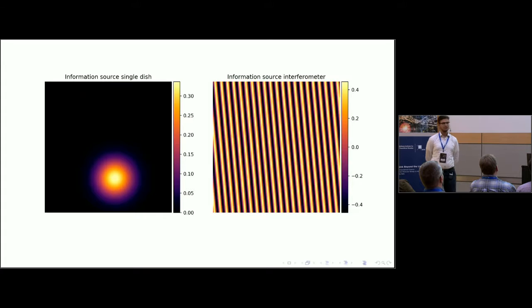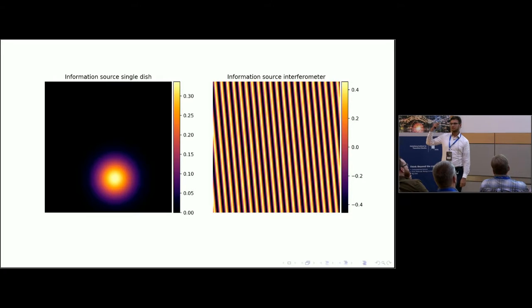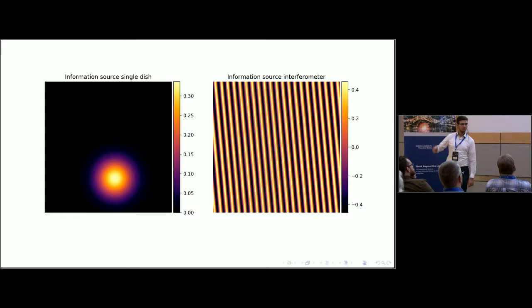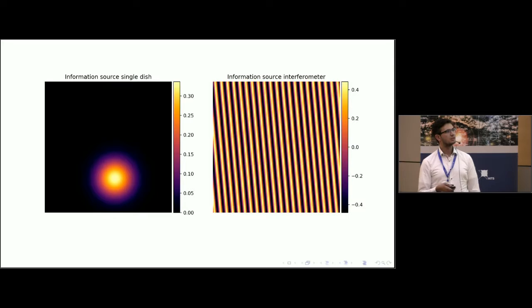Here you basically see what the two different kinds of instruments see. The single dish looks at some point into the sky, measures something, and what you see here is basically back projected on where this data would have come from. Whereas for the interferometer you measure one individual frequency, one baseline and one individual frequency of the Fourier transformed sky brightness. This is really completely different kind of information of the same part of the sky. And we do not only have one pointing of the single dish but we have many of them as well as we have many baselines for the interferometer. So we just add them up and basically we get this kind of information from the different instruments.